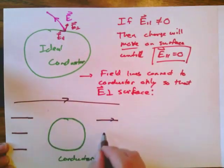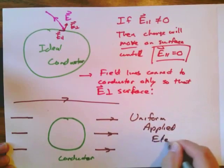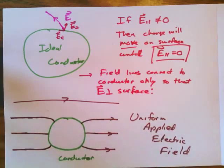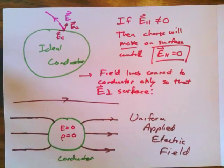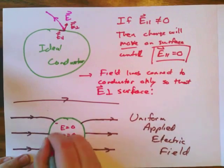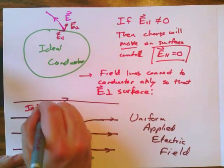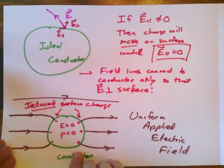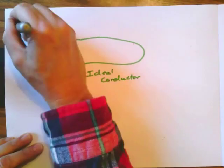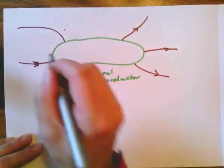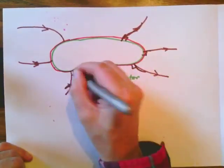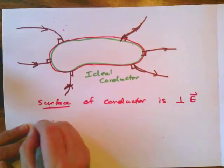If we take a neutral conductor and embed it in a uniform electric field — as indicated by the brown lines here — those field lines are interrupted by the conductor. There is no field inside the conductor, and the field lines must intersect the conductor's surface at right angles, bending so they come in perpendicular. For this to happen, something called an induced surface charge — both negative and positive — must appear on the surface to cancel the interior field.